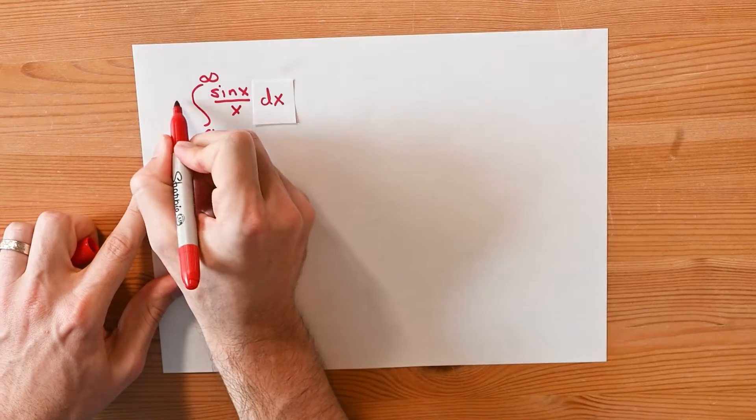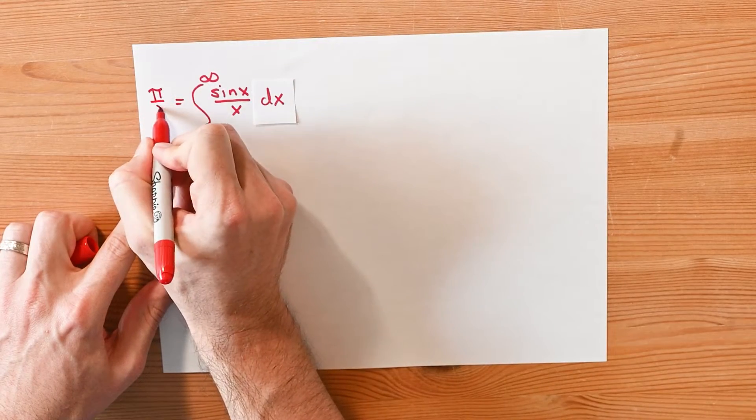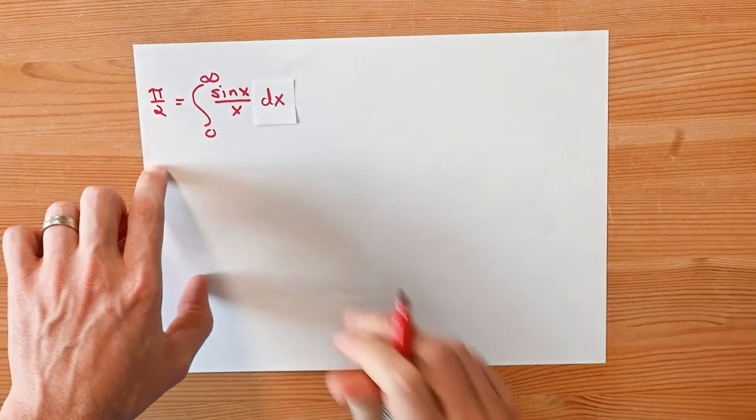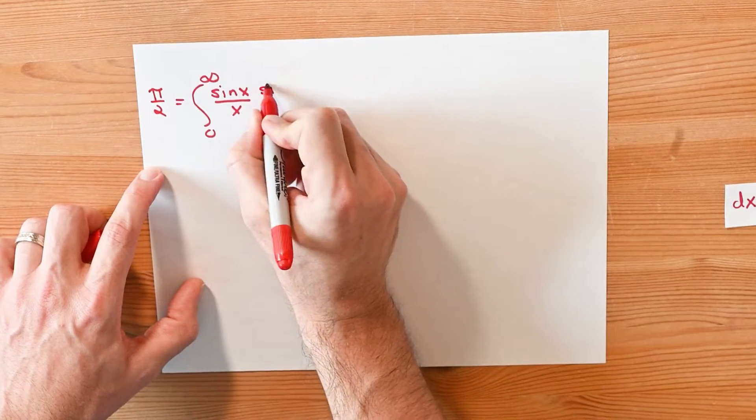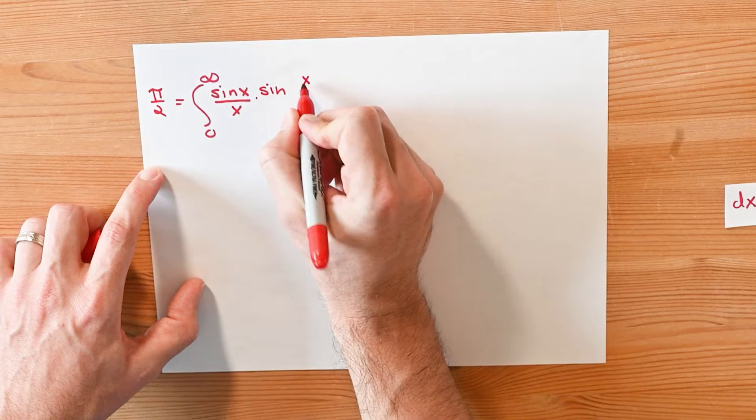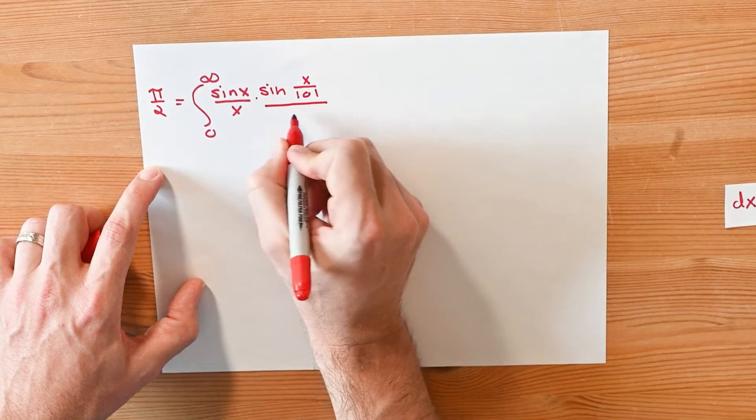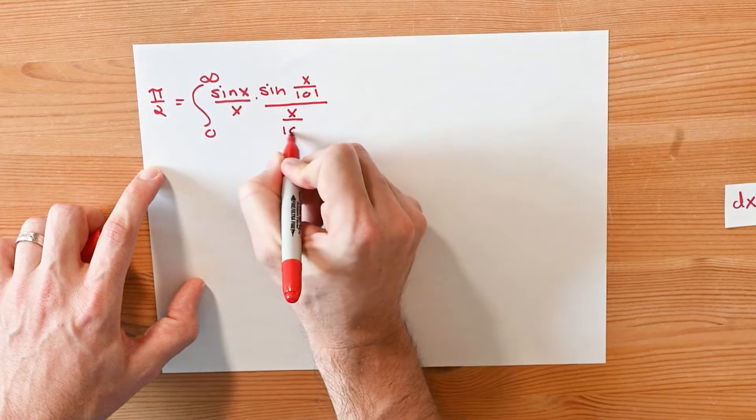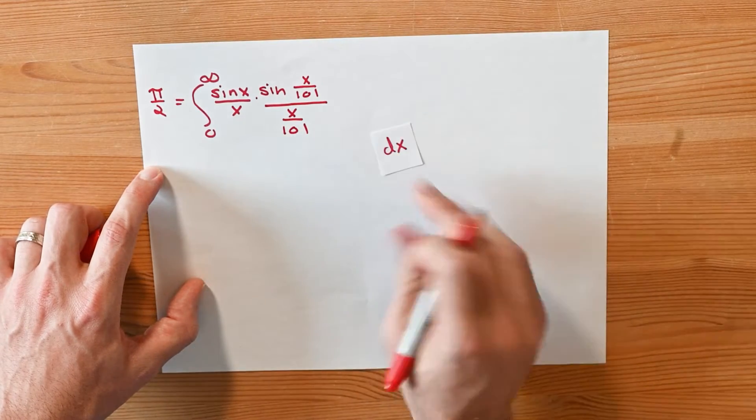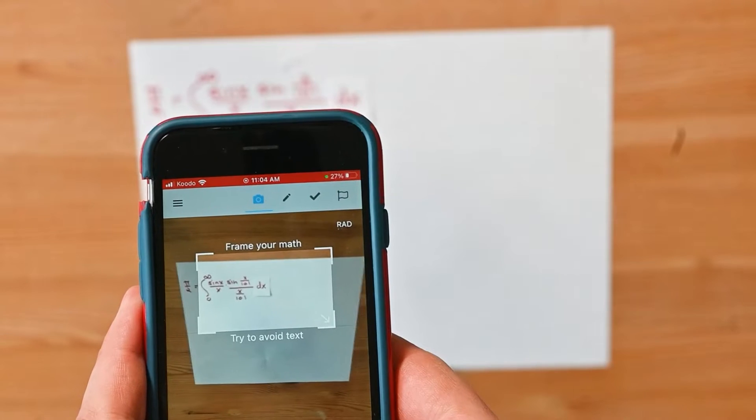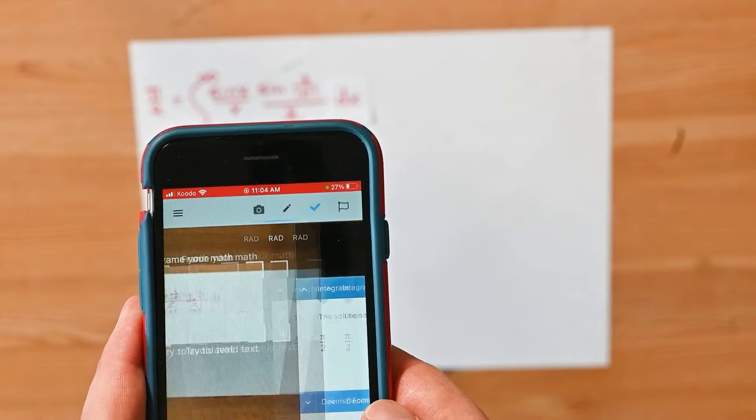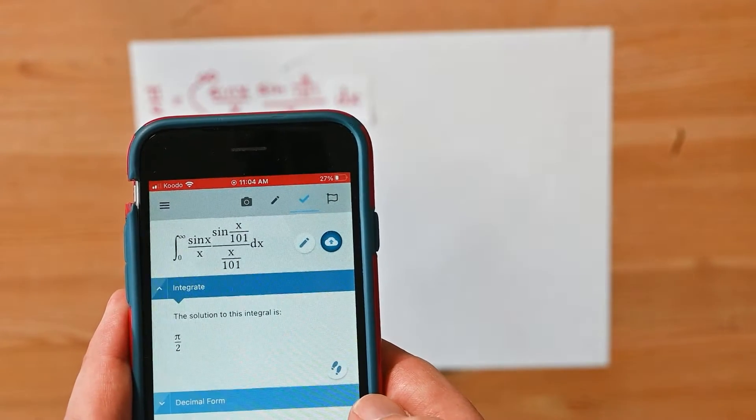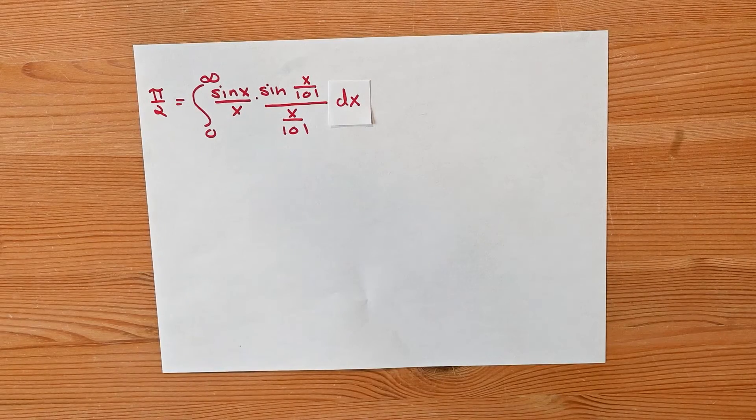So let's write that down here. The answer to this is apparently pi divided by 2. And let's keep on going. I'm going to remove my dx and I'm going to add another term. I'm going to write sine of x divided by 101, and then divide it by x divided by 101. And now I'm going to put the dx on the far right-hand side. We'll do our trick with Maple Calculator again. Let's see what it interprets. Once again, it figures out that this is pi over 2. So this integral is again the value pi over 2. Kind of interesting.